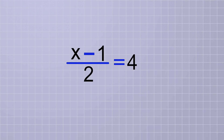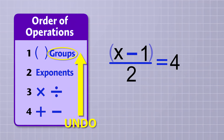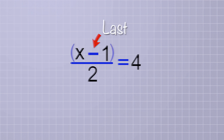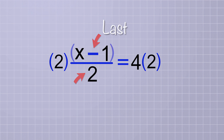Getting back to our new problem, now that we know the x minus 1 on the top of the fraction line is an implied group — as we learned in our last example — we're going to wait and undo the operation inside that group last. So the first step is to undo the divided by 2 by multiplying both sides of the equation by 2.